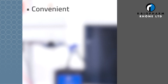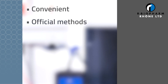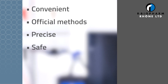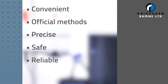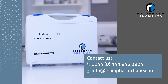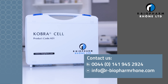The COBRA cell: easy derivatization for everyday use in the laboratory. Recommended in numerous official methods. Precise and reliable results. Eliminates the use of hazardous chemicals. Can be used within the laboratory for many years. Produced by a trusted partner. Contact us for further information on the original electrochemical derivatization unit.